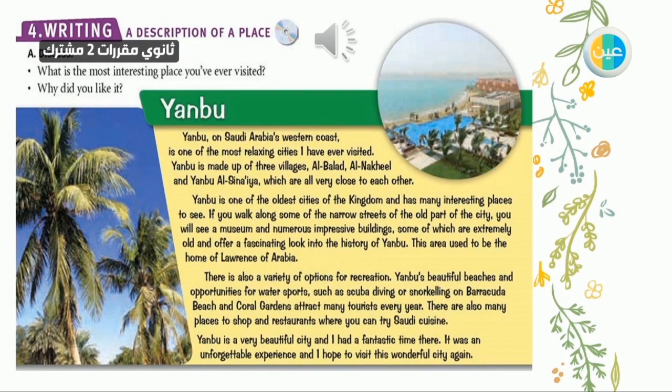The second part — we're going to write a description of a place. The example in your book is about Yanbu. I want you to read it silently so we can understand what's happening in the paragraph, because we're going to try to write our own version about another city. Look at paragraph one: since you're writing about a city, you have to tell me its name and where it is — for example, which part of the country, north or south.